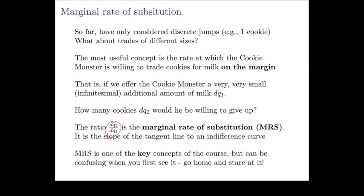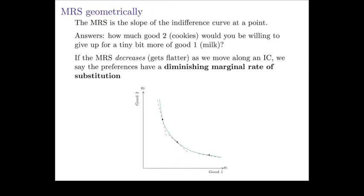This is going to be one of the key concepts in this course, so I strongly recommend spending extra time making sure you understand it. Geometrically, the marginal rate of substitution is the slope of the indifference curve at any given point. It answers the question: how much of good 2 are you willing to give up for a tiny bit more of good 1? If the marginal rate of substitution decreases, the indifference curve gets flatter as we move to the right, meaning the slope is decreasing.